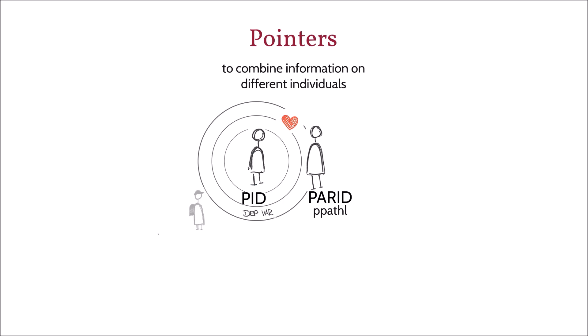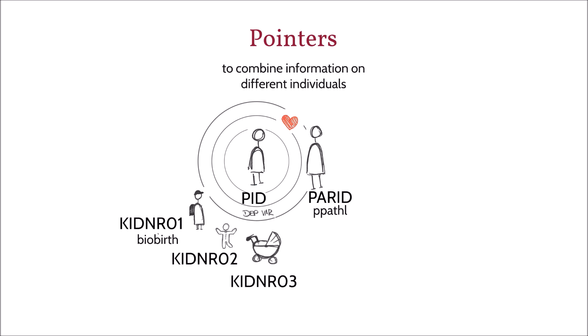Information on children can be merged using the pointers to each child's individual ID, called KID number, which you find in the BioBirth dataset. This dataset contains pointers to all children of every mother. Unfortunately, such a dataset does not exist for fathers, as we only observe social but not biological fathers in the SERP.